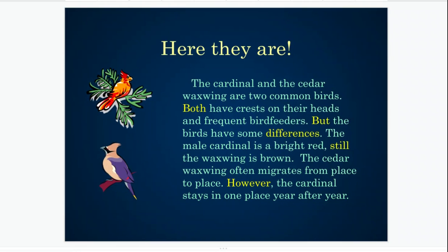Let's look at your compare and contrast example. In this passage, I can see two different types of birds: the cardinal and the cedar waxwing. Both have crests on their heads and frequent bird feeders. But the birds have some differences. The male cardinal is bright red, while the waxwing is brown. The cedar waxwing often migrates from place to place; however, the cardinal stays in one place year after year. Did you see those signal words? Both, differences, but, still, however — these were clues that they're comparing two different kinds of birds. Make sure you highlight or circle and underline those signal words for your compare and contrast example.